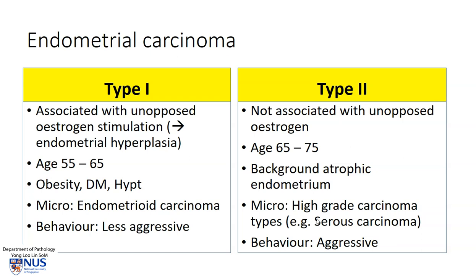Microscopically, Type 2 usually comprises one of the higher grade types of carcinomas, for example serous carcinoma. This is generally more aggressive in terms of behavior. These two types of tumors are also associated with different molecular alterations.